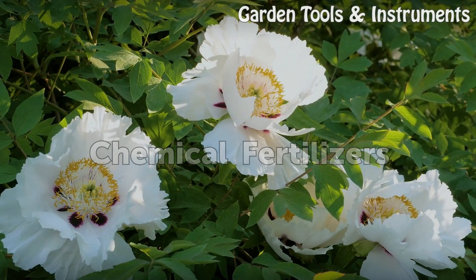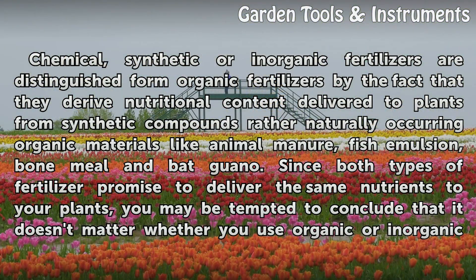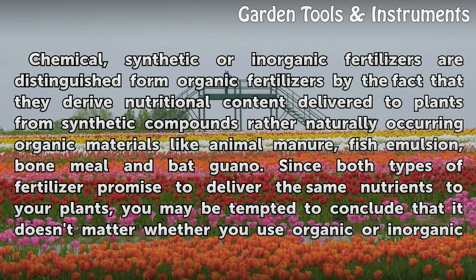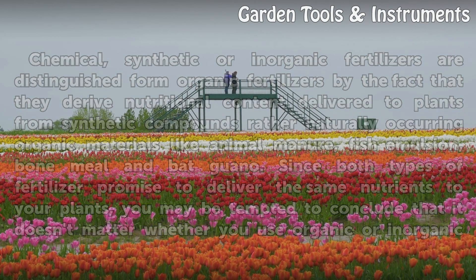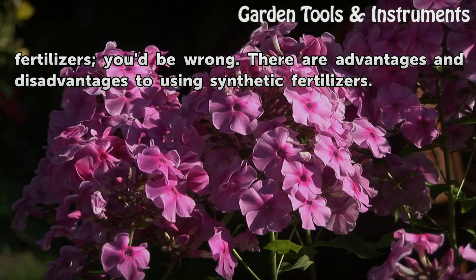Chemical, synthetic, or inorganic fertilizers are distinguished from organic fertilizers by the fact that they derive nutritional content delivered to plants from synthetic compounds rather than naturally occurring organic materials like animal manure, fish emulsion, bone meal, and guano. Since both types of fertilizer promise to deliver the same nutrients to your plants, you may be tempted to conclude that it doesn't matter whether you use organic or inorganic fertilizers — you'd be wrong. There are advantages and disadvantages to using synthetic fertilizers.